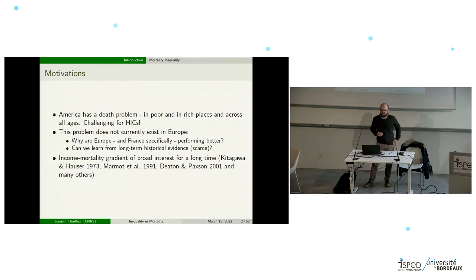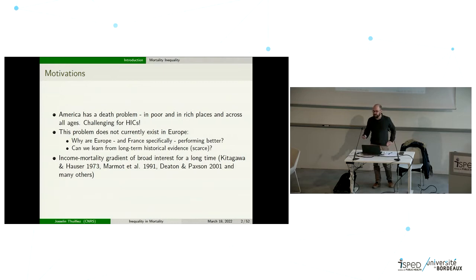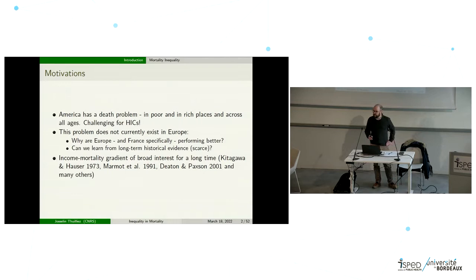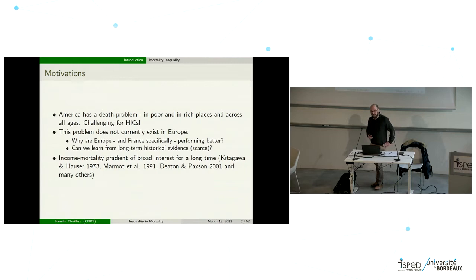My motivation today starts with the fact that America has a death problem — in poor and rich places and across all ages. Mostly, American deaths are higher than European deaths, and this is challenging to understand for high-income countries, but also for the general relationship between inequality, income, and health broadly speaking. The problem does not currently exist in Europe, so the question is why Europe — and France specifically — is performing better than the US.